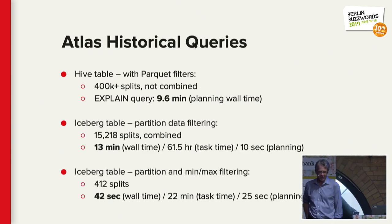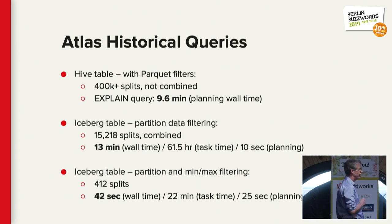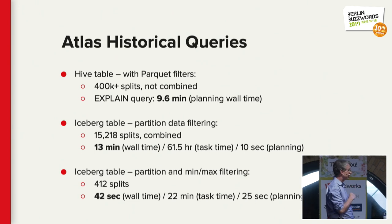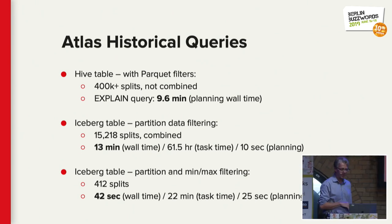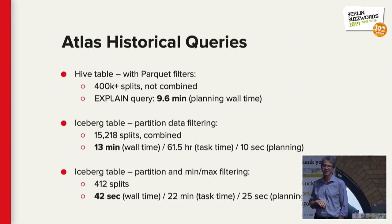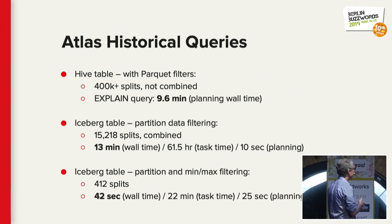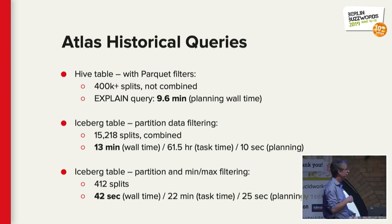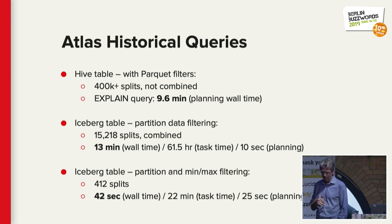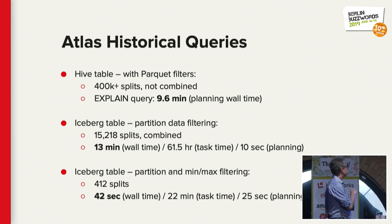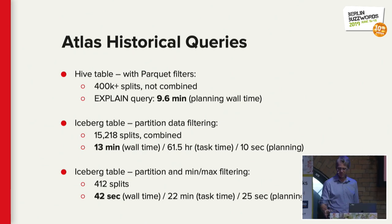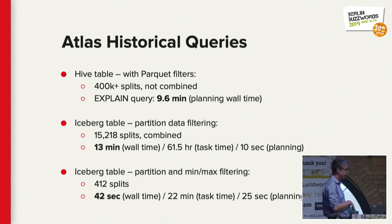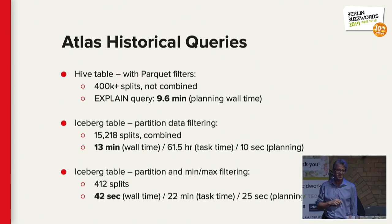When they ran it on Hive, they got 400,000 splits — those are individual units of work. Just doing the planning, the explained query took nine and a half minutes. When they replaced it with Iceberg, they got down to 15,000 splits, and the whole thing ran in 13 minutes. It was 61 hours of cumulative task time, but the wall time was 13 minutes, and it only took 10 seconds of planning.